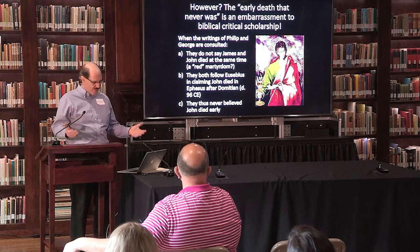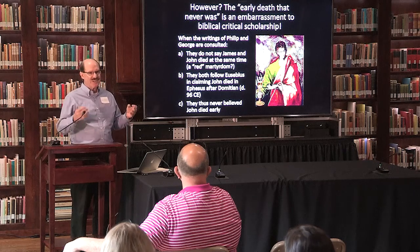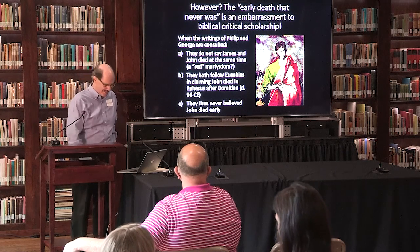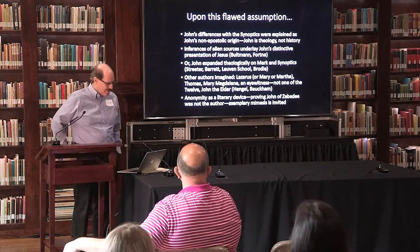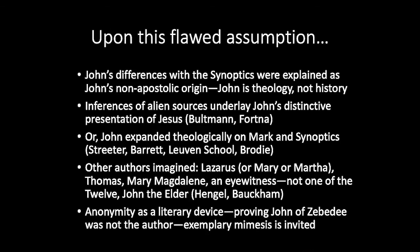I'd be happy to believe that John was boiled in oil in Rome, but that's just a little detail that Tertullian puts out there in the second century that nobody else does. So on this flawed assumption, John's differences and opposites are explained as John's non-apostolic origin — John is theology, not history. But when I examined all of Bultmann's evidence and Fortna's evidence, there's no evidence for underlying alien sources in John. No evidence. I did this research at Tübingen.